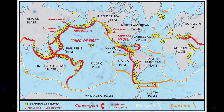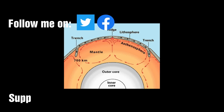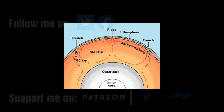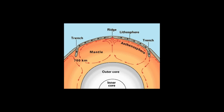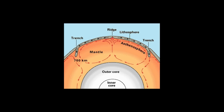Plate tectonics theory is widely accepted, but as stated in the opening, the driving force for this motion is open to speculation. Currently, the definition of this force is that when new crust forms at mid-ocean ridges, the oceanic lithosphere is initially less dense than the underlying asthenosphere, but it becomes denser with age as it conductively cools and thickens. The greater density of the old lithosphere relative to the underlying asthenosphere allows it to sink into the deep mantle at subduction zones, providing most of the driving force for plate motion.